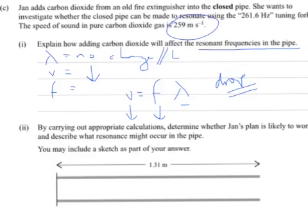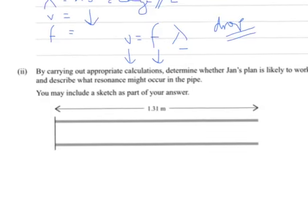Have I missed anything obvious? No. Just looking at it now, it looks like it's only an achieved question, so I might have got a little bit too detailed. Formula V equals F lambda. V drops. F has to drop for constant wavelength. Part 2, by carrying out appropriate calculations...